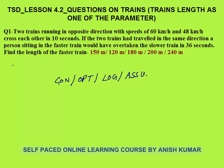First question: two trains running in opposite directions with speeds 60 km/h and 48 km/h cross each other in 10 seconds. When two trains cross in opposite directions, the distance travelled is equal to the length of both trains — the length of the faster train plus the length of the slower train.